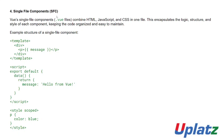In a single file component (.vue, called SFC), HTML is in the template, JavaScript is in the script, and style is in the style block. Within the template tag we use a div tag with a p tag, then message within two curly braces — Vue uses two curly braces for expressions. Here 'message' will be printed.